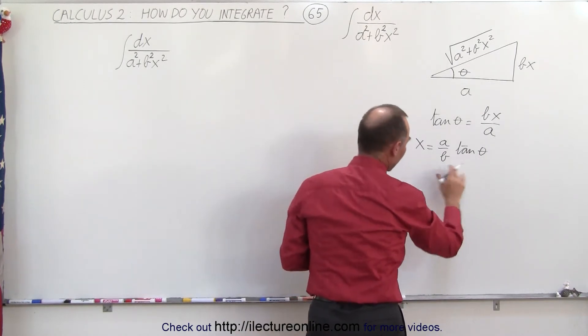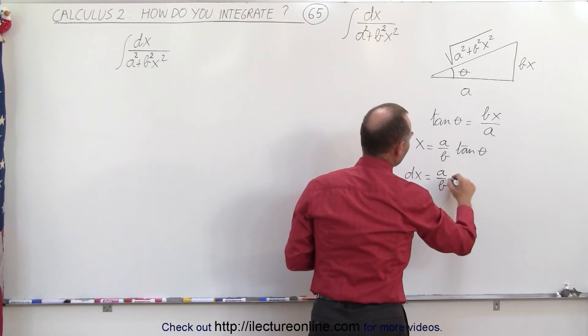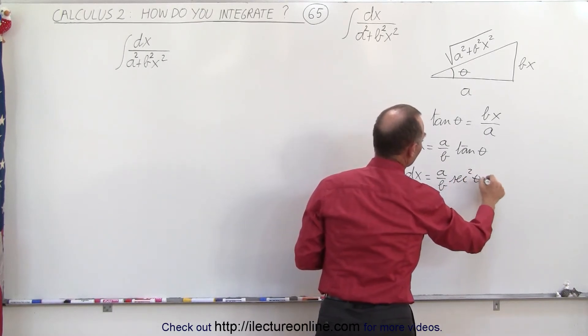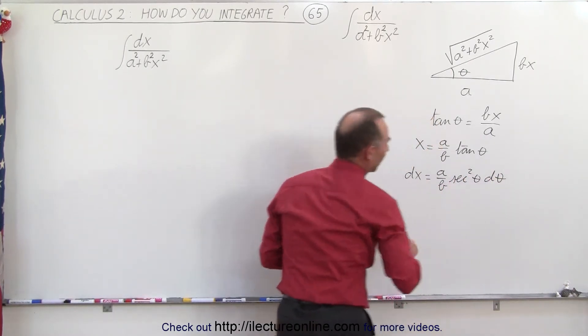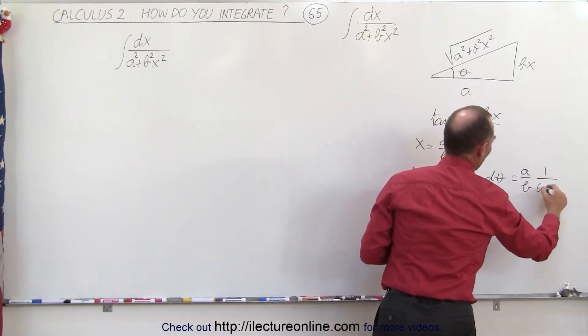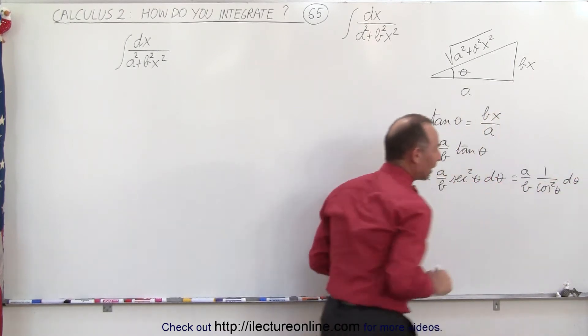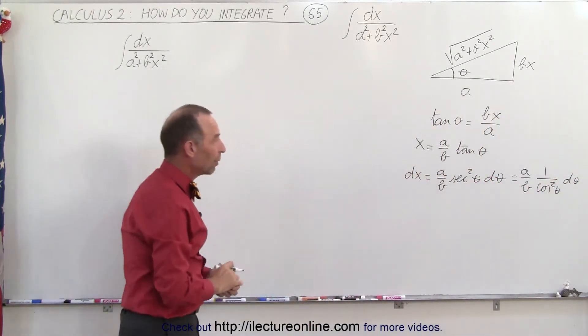And if we take the derivative of both sides, we can say that DX is equal to A over B times the secant square of theta d theta. And we can also write this as A over B times 1 over the cosine square of theta d theta because you'll see that will be a better form to use when we substitute.